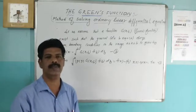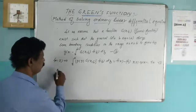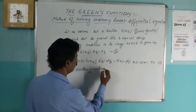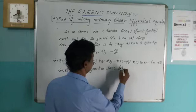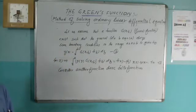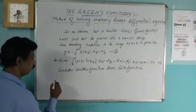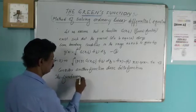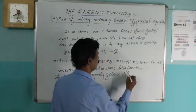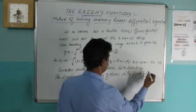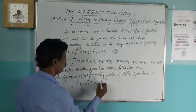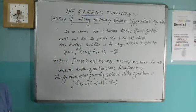Now we consider another function — the Dirac delta function. The fundamental property of the Dirac delta function is: integral of f(t)·δ(t−a) dt = f(a). After explaining this, I will explain what the Dirac delta function is.